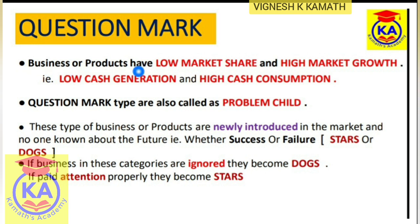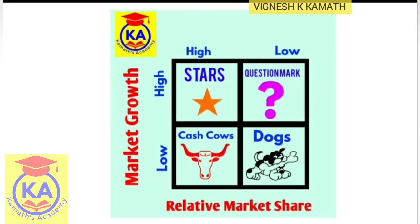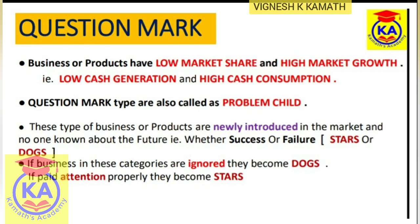Question Mark businesses or products have low market share and high market growth — that is, low cash generation and high cash consumption. In question mark type, cash consumption is more and cash generation is very low. Question Mark types are also called 'problem child'.